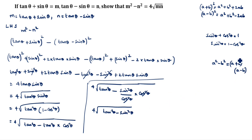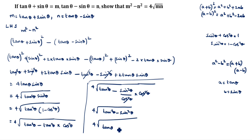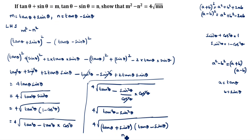Using a² - b² = (a + b)(a - b): 4√(tan²θ - sin²θ) = 4√((tan θ + sin θ)(tan θ - sin θ)). Since tan θ + sin θ = m and tan θ - sin θ = n, this equals 4√(mn). So m² - n² = 4√(mn). Hence proved. This is the first method.